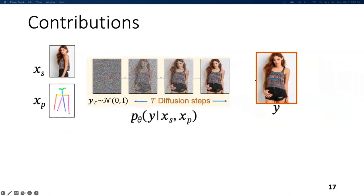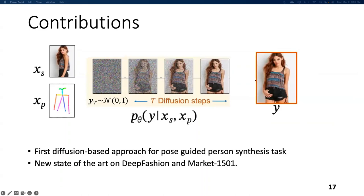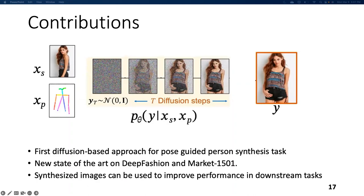Following are the main contributions of this paper. It is the first diffusion-based approach for the pose-guided person synthesis task. It sets a new state-of-the-art on the Deep Fashion and Market datasets. The authors also show that the synthesized images can be used in downstream tasks.